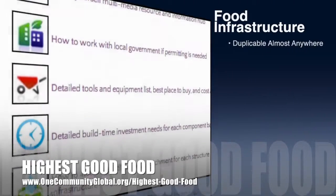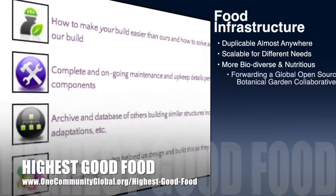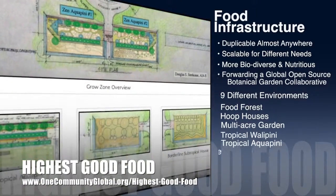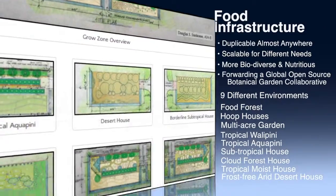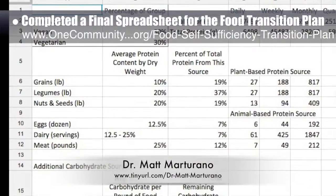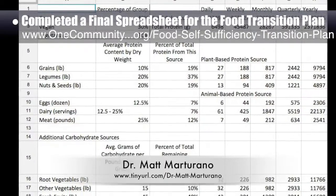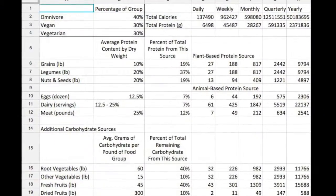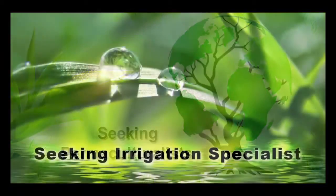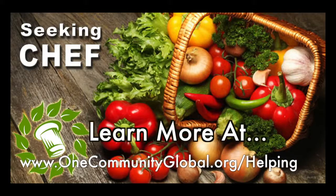One Community's approach to highest good food is duplicable almost anywhere, scalable for different needs, more biodiverse and nutritious, part of forwarding a global open source botanical garden collaborative, and includes nine different free shared and duplicable growing environments. This week, for our food self-sufficiency transition plan page, naturopathic Dr. Matt Maturano, creator of the coherent model for comprehensive digestive health, completed a final spreadsheet for the food transition plan, which you can see here. We now have nutritional and caloric targets for all our major food categories. In this area of our open source project, we are seeking permaculturalists, an irrigation specialist, a surveyor, and a chef to join our team as either consultants or pioneers who will be moving onto the property with us.